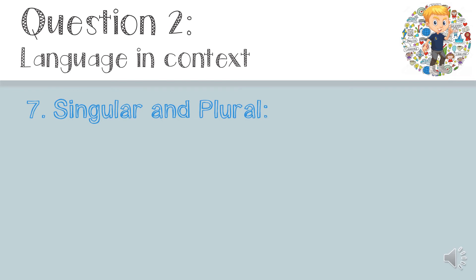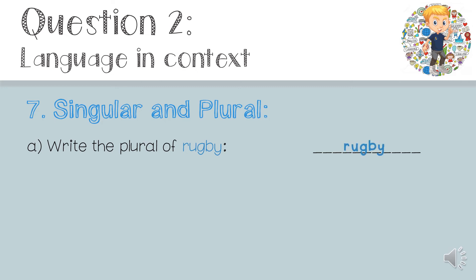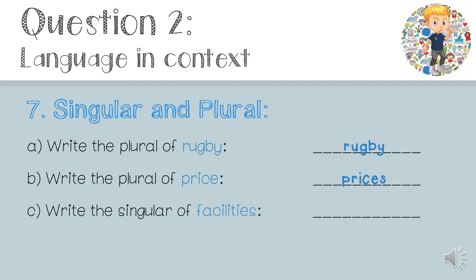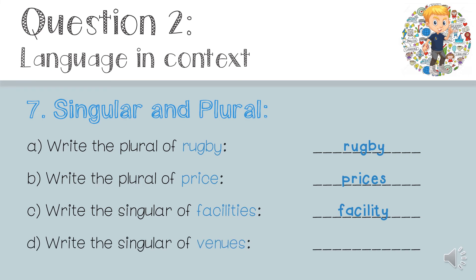Now let's look at singular and plural. Remember, singular is one and plural is more than one. Number A: write the plural for 'rugby' — rugby doesn't have a plural, it stays 'rugby'. Number B: write the plural of 'price' — you just put an S at the end: 'prices'. Number C: write the singular of 'facilities' — this is just 'facility'. Remember, when changing from singular to plural, the Y changes to an I and you add ES. Number D: write the singular of 'venues' — you just take away the S: 'venue'.